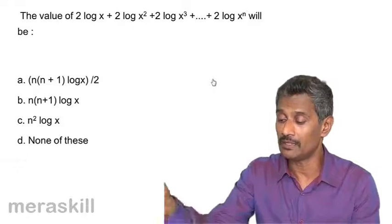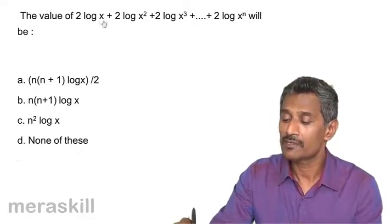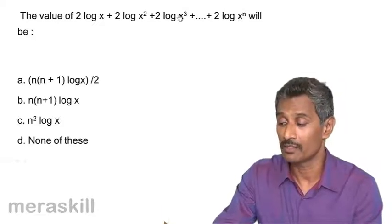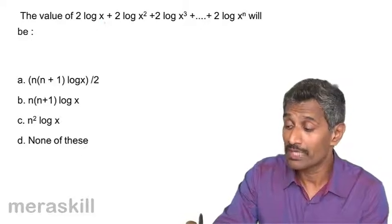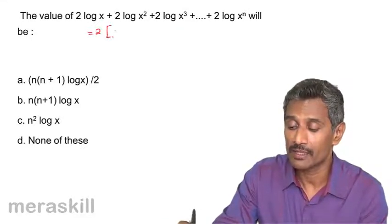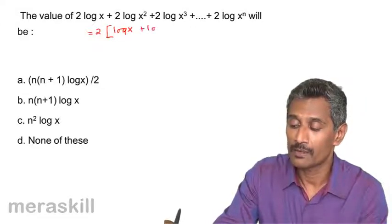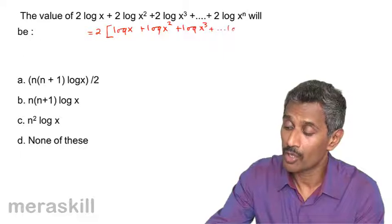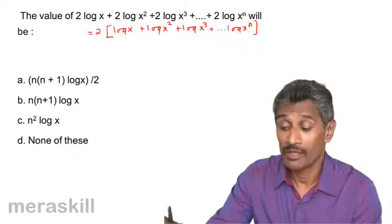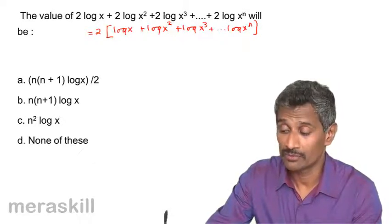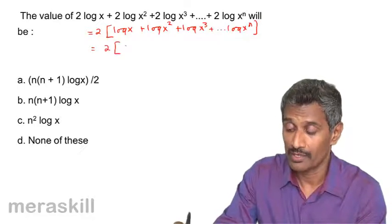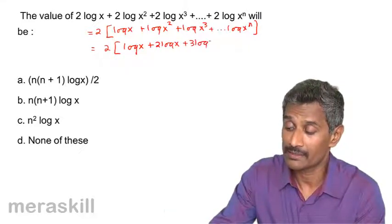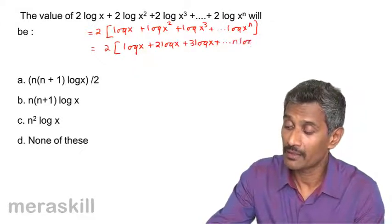The next problem involves a series: 2·log x + 2·log x² + 2·log x³ + ... + 2·log xⁿ. What is the value of this? We need to add all these terms. Applying the power rule, the index becomes a coefficient, so we get 2·log x + 2·log x + 3·log x + ... + n·log x, which simplifies to 1·log x + 2·log x + 3·log x + ... + n·log x.